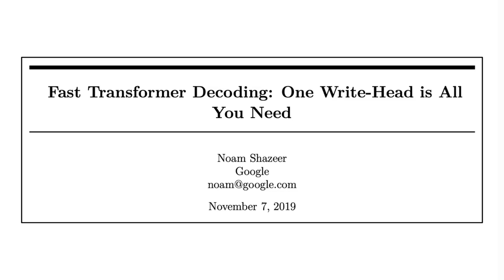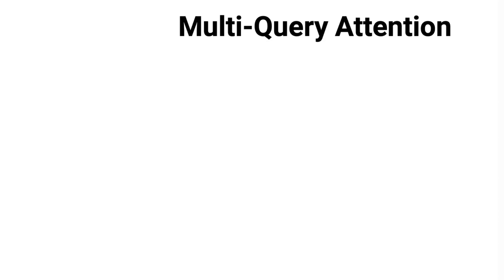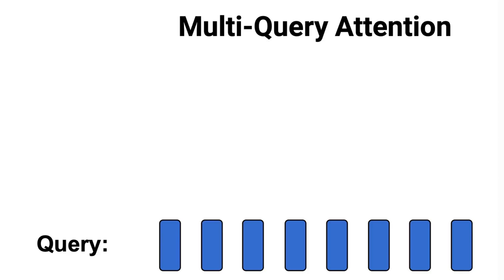The first approach for dealing with this memory bandwidth issue is called multi-query attention, which was proposed in the paper, fast transformer decoding, one write head is all you need. Similar to the multi-head attention, we still have h query heads, as shown here, but we use a single shared key and a single shared value head.